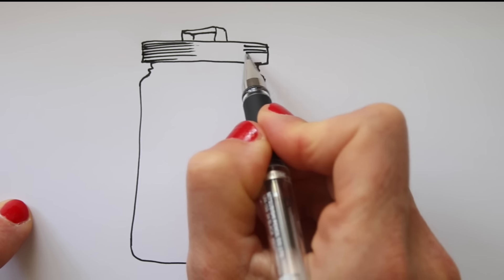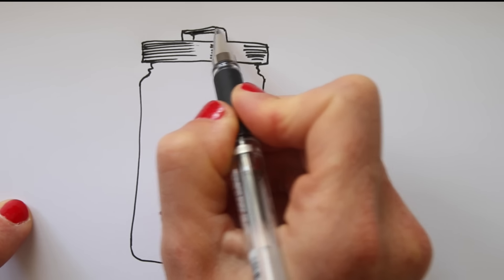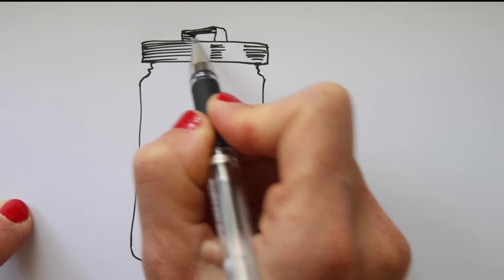On the lid of the jar, I draw lines where I see shading, and I make sure to leave white space for the highlighted areas on the lid.